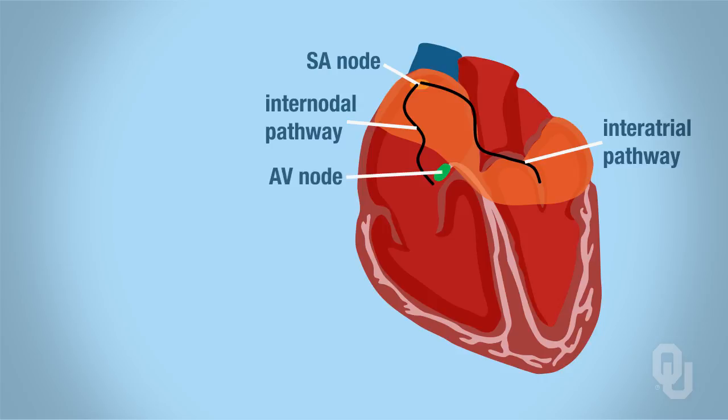Once this action potential spreads through the atria to the AV node, conduction slows. This is called an AV nodal delay. At this point, if we're thinking about filling of the heart, the ventricles would be 80% filled with blood.